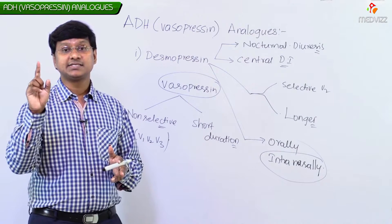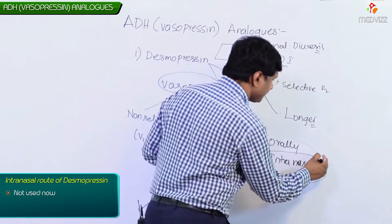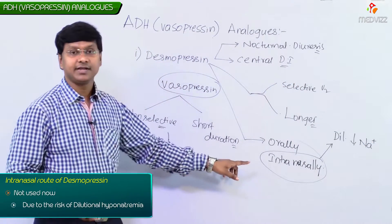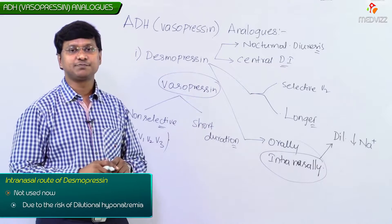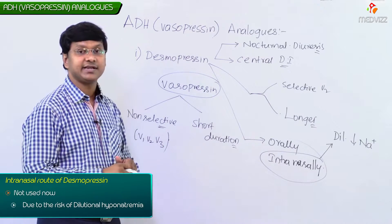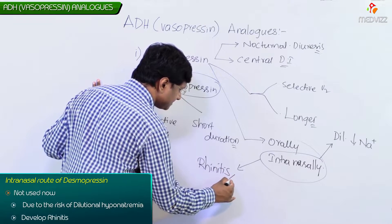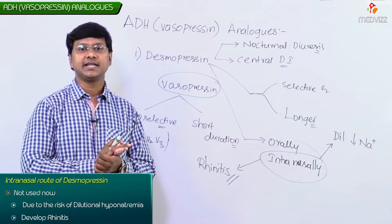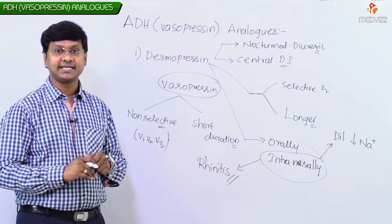Intranasal Desmopressin is not preferred now because of the risk of dilutional hyponatremia. That is the reason why we are not using intranasal Desmopressin. Another disadvantage is that when Desmopressin is given intranasally, individuals are more prone to develop rhinitis.